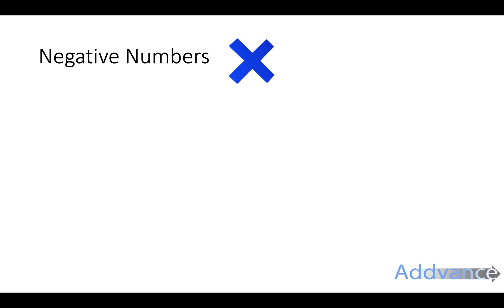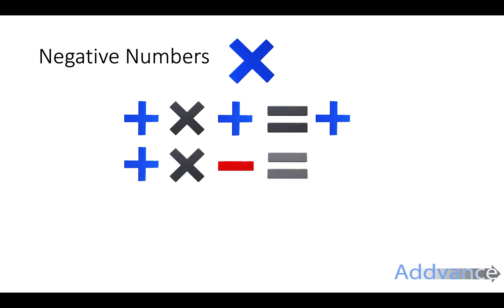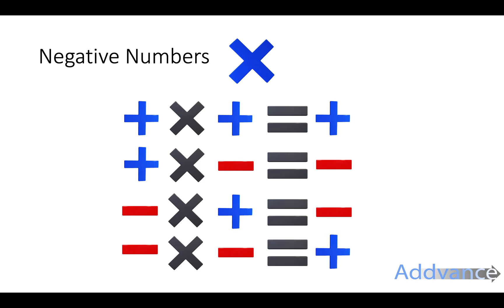Now let's look at multiplying negative numbers. The rule is a positive times a positive is a positive. A positive times a negative is a negative. A negative times a positive is a negative. A negative times a negative is a positive. I would copy this into your books now. This is really important you remember these rules. If you remember this, we're happy.